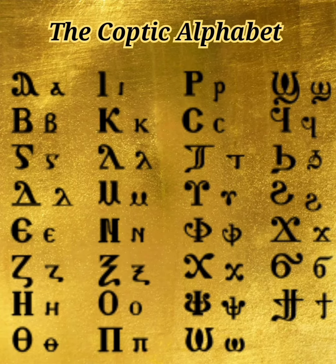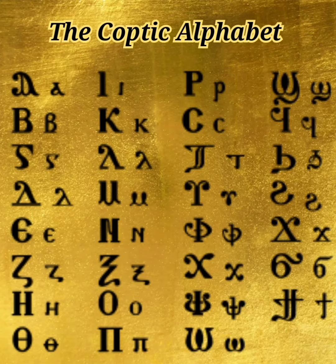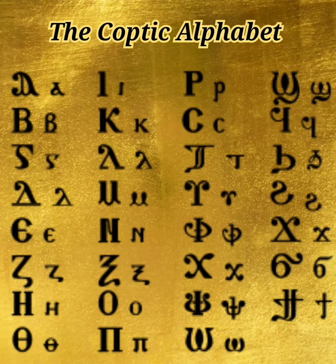Alpha A, Vita V B, Rama R G, Selta Th D, A E, So — it means the number six. Zita Z, Ita I, Thita Th, Yota I, Kappa K, Lola L, Mi M, Ni N, X X.